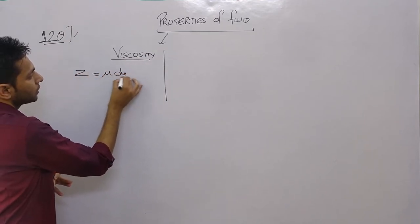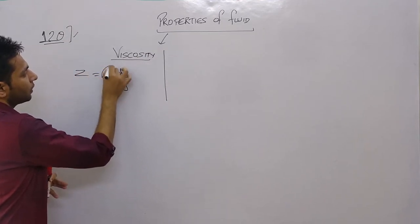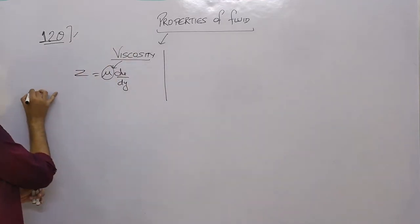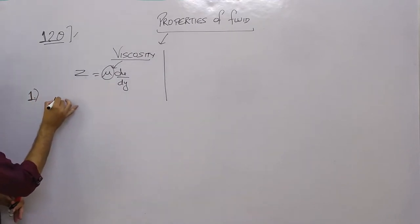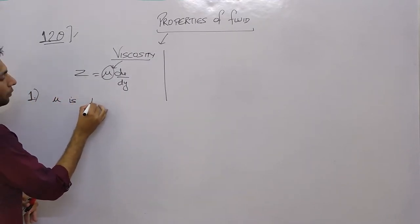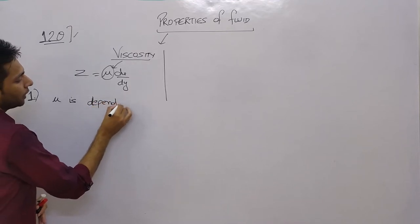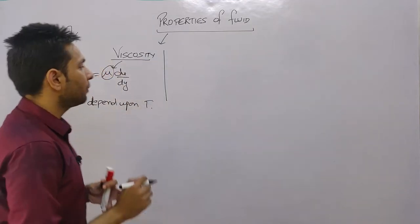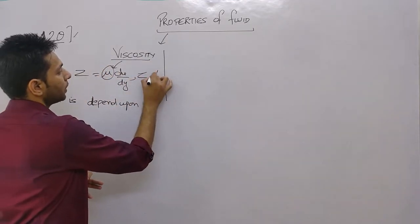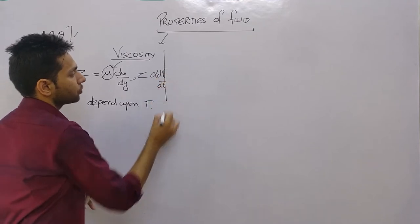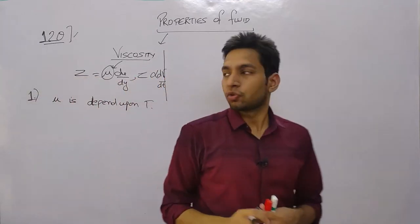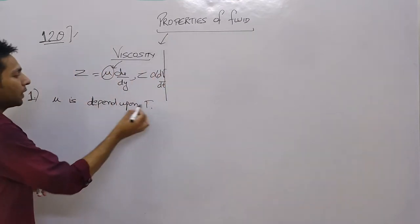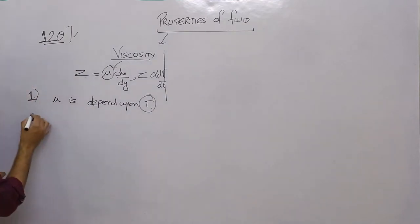Viscosity depends upon temperature. It looks constant but it is a temperature function, because when we define tau as proportional to the rate of change of shear strain, it is not an absolute constant.